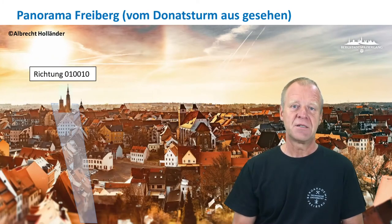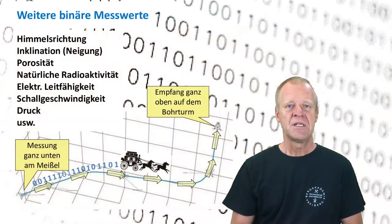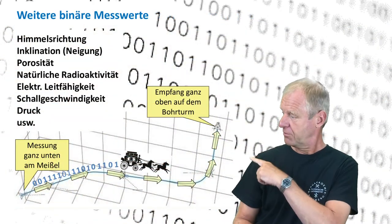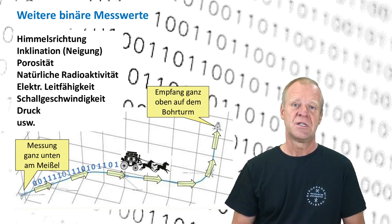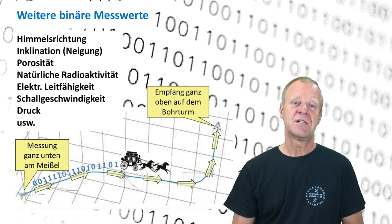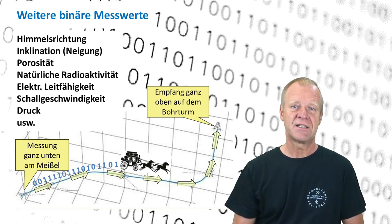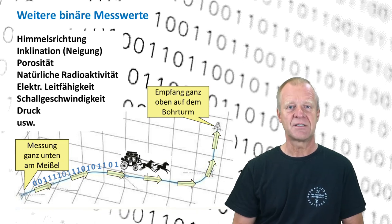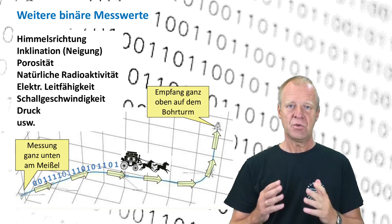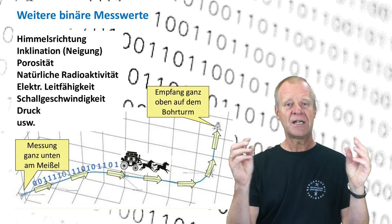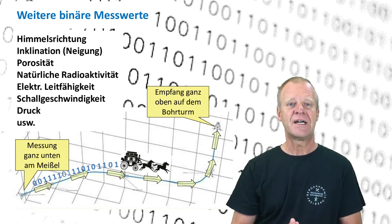Just as we have shown with the compass direction — the azimuth — by using bits, we can do the same for all our measurements and readings from the borehole. We can represent them all by 0 and 1. The more precisely we specify a value, the more 0s and 1s we use. So if we want to transmit many measured values with high accuracy, we have to handle long strings of 0s and 1s.